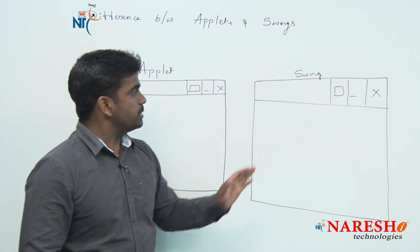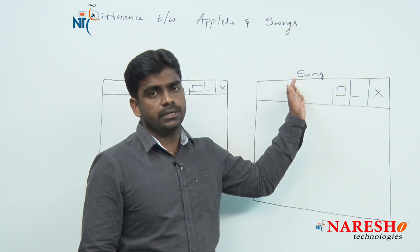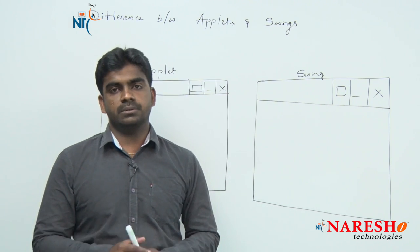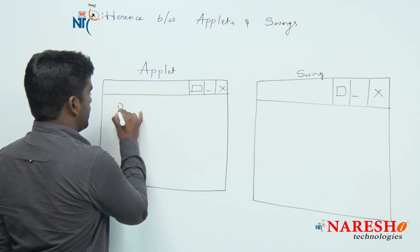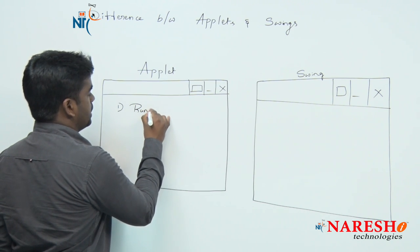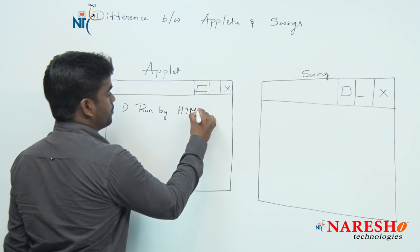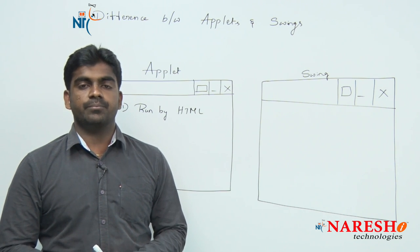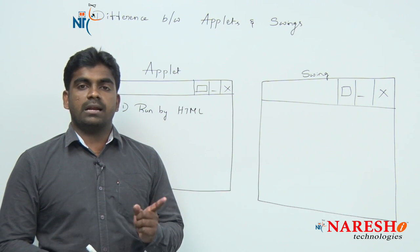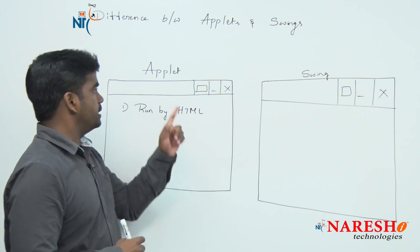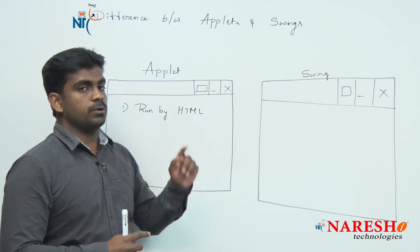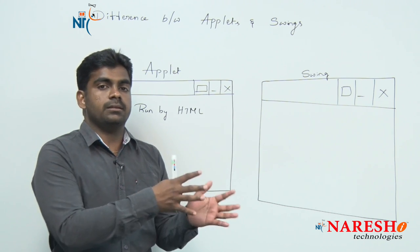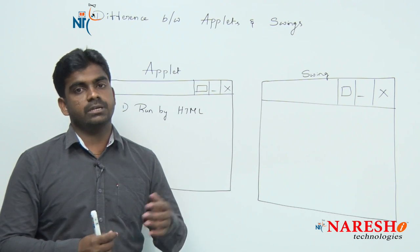But what is the reason behind introducing Swings when we already have Applets? The first main reason is that Applets run by another technology — HTML. Every browser has one interpreter, and HTML code runs by that browser interpreter only. Applets also run by the browser interpreter, so your Java technology depends on another technology, which is HTML.